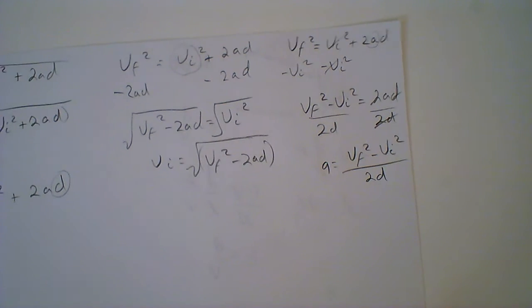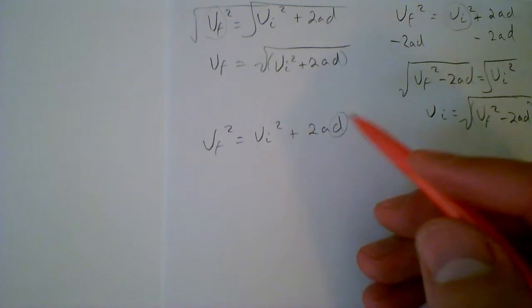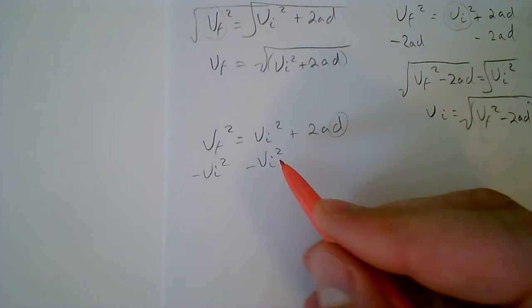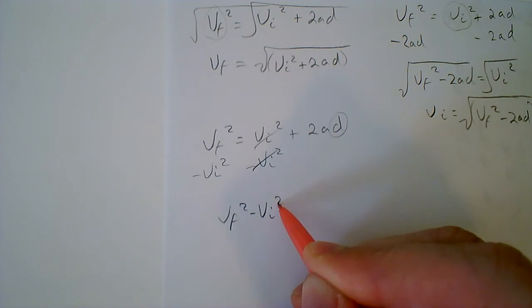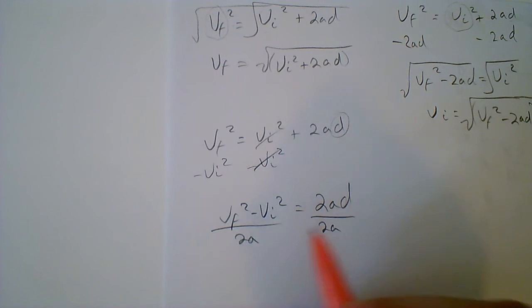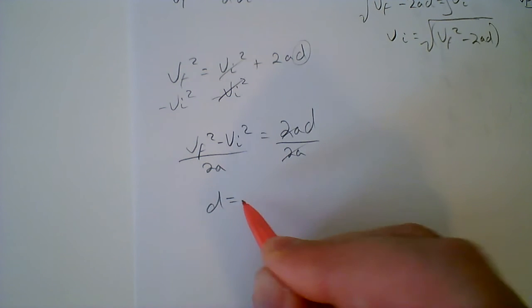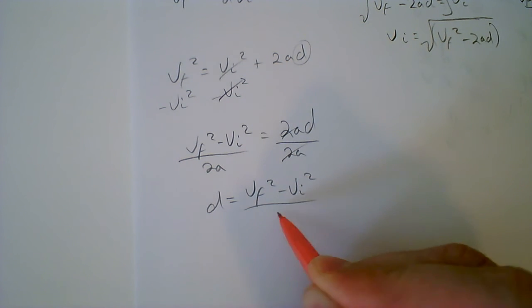And then lastly, if we want to rearrange that equation for D, it's practically the same thing. Minus VI squared, and we end up getting VF squared minus VI squared equals 2AD. Divide out the 2A, this time 2A, and we end up getting D equals VF squared minus VI squared over 2A.